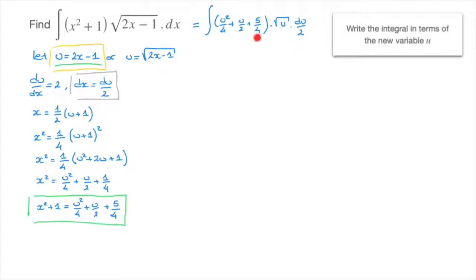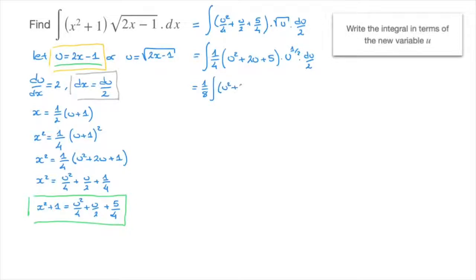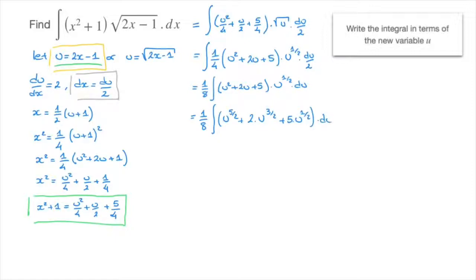To simplify, I'll take a factor of 1 over 4 out of those parentheses, giving the integral of (1/4)(u squared plus 2u plus 5) times u to the power of 1/2, times du over 2. Taking the 1 over 2 out and multiplying with 1 over 4 gives 1 over 8 times the integral of (u squared plus 2u plus 5) times u to the power of 1/2 du. Distributing, this becomes 1 over 8 times the integral of u to the 5/2 plus 2u to the 3/2 plus 5u to the 1/2 du.